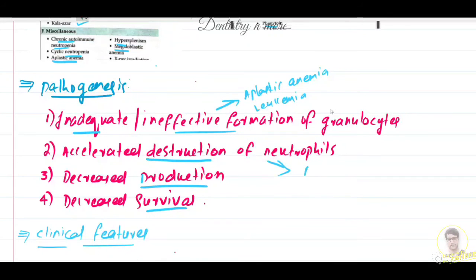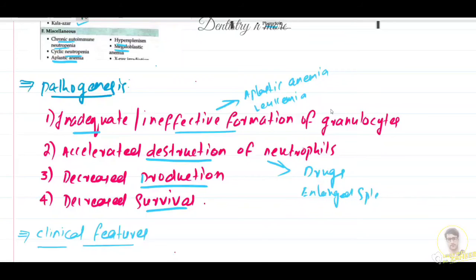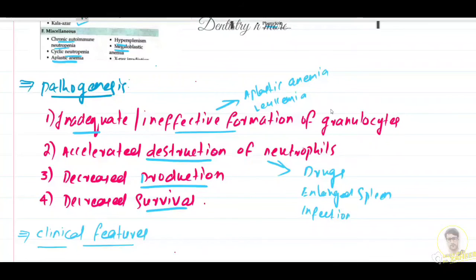Accelerated destruction of neutrophils can be caused by immune-mediated reactions to neutrophils, which can be caused by drugs. An enlarged spleen can lead to splenic sequestration and accelerated removal of neutrophils. Utilization of neutrophils can also occur in infection. In all these cases we can see accelerated destruction of neutrophils.